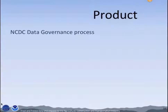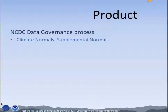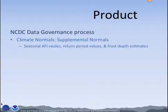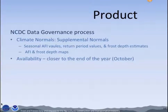We're currently working with NCDC on a data governance process to make this a product. It's been proposed that this would be part of the supplemental normals. We hope to offer seasonal AFI values, return period values, and frost depth estimates, as well as AFI and frost depth maps. If all things go well, this is estimated to be available by the end of the year, around October.